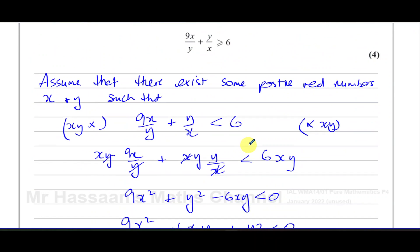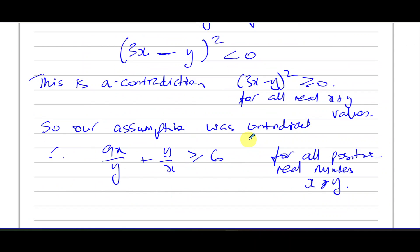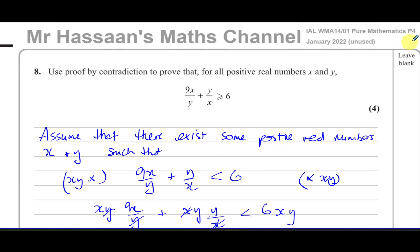That's the answer to question number eight. Proof by contradiction is a relatively new topic in P4 — it wasn't in the old specification, so there are fewer questions on it. The first paper featuring it was October 2020. Other questions from this January 2022 unused paper are in the playlist linked at the top right. You'll also find a link to the proofs topic from P4, and you can subscribe by clicking the link in the middle. Thanks for watching — see you soon.